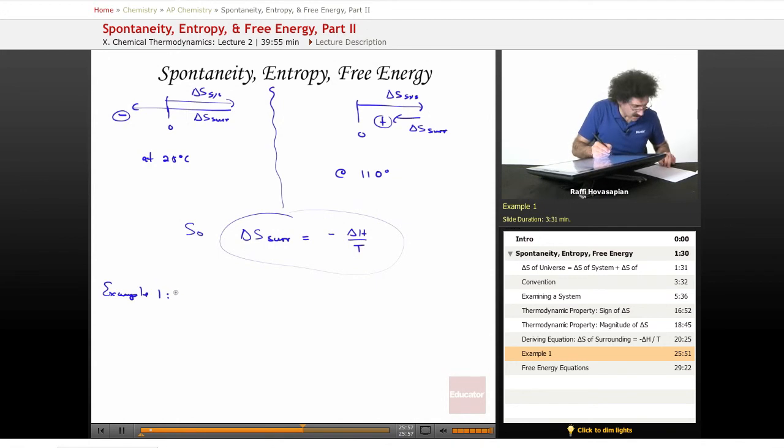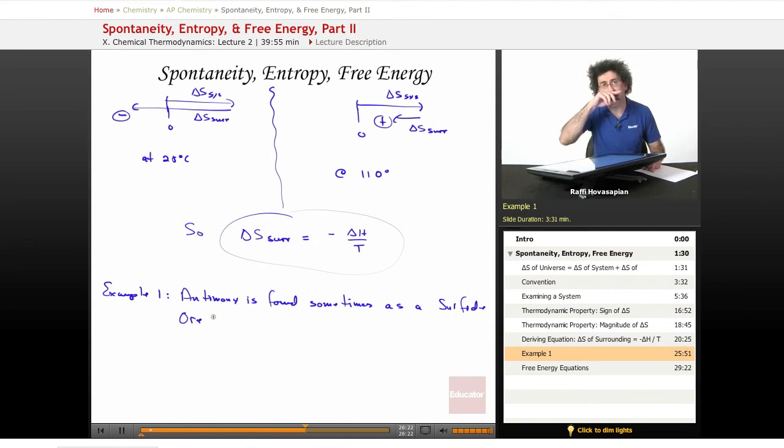Example 1. Antimony is found sometimes as a sulfide ore. In other words, it's antimony sulfide as opposed to just pure antimony. We have to find a way to pull out the antimony, separate it from the sulfur.